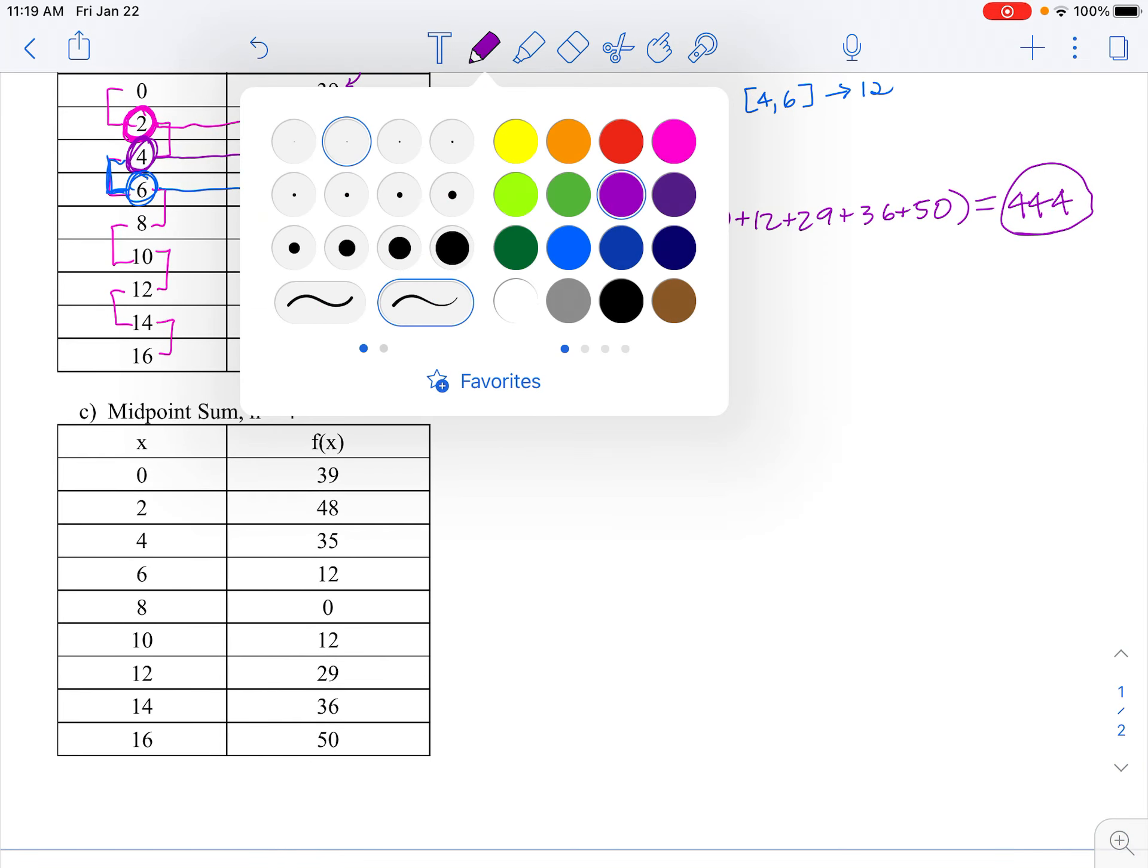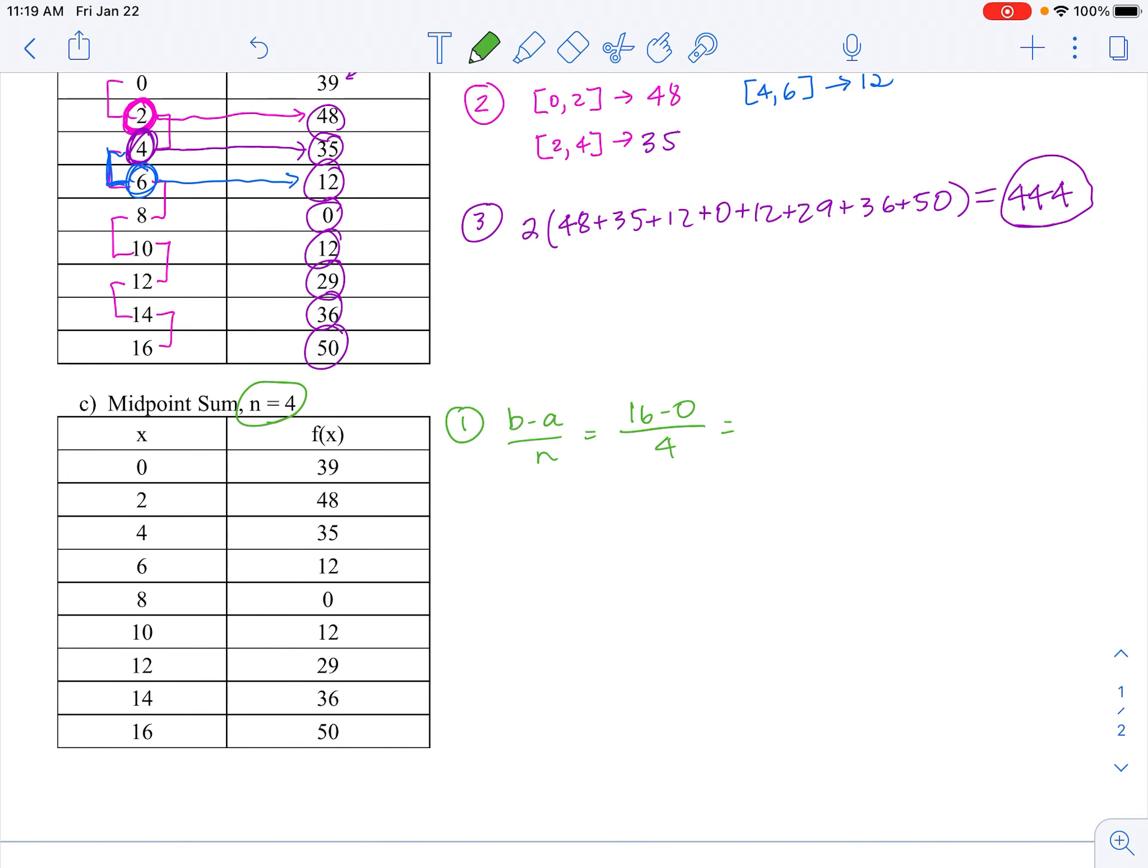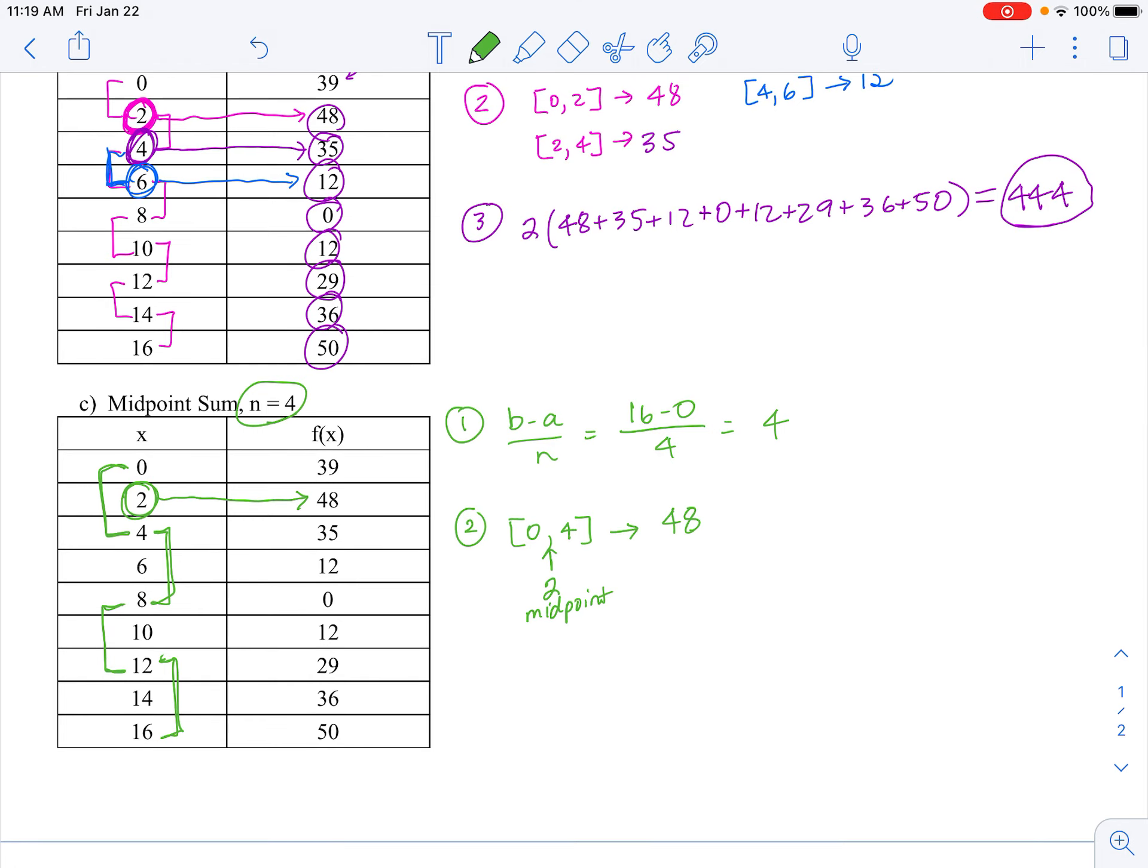And lastly, we're going to switch up here to midpoints. We're back to n equals 4, so if I do b minus a divided by n to get the width of each one, it's 16 minus 0 divided by 4, so each rectangle is 4 units wide again. And now when I calculate my heights for the first interval, 0 to 4, what gets really interesting here is that the midpoint of that interval is 2. So that means when I come up with the height for this interval, I'm actually using the height at the number 2 and using 48 for my first rectangle.